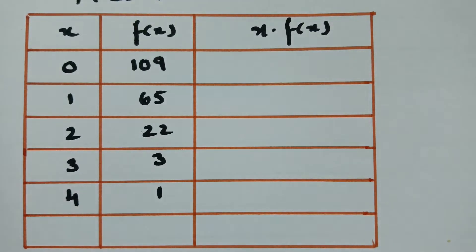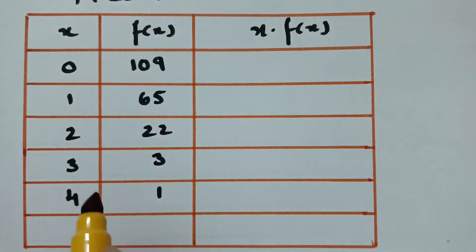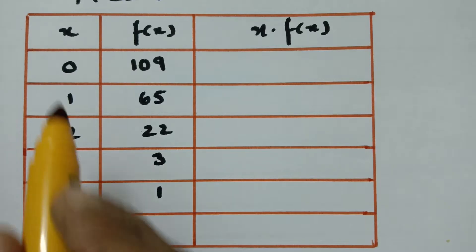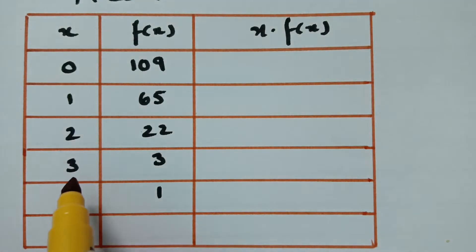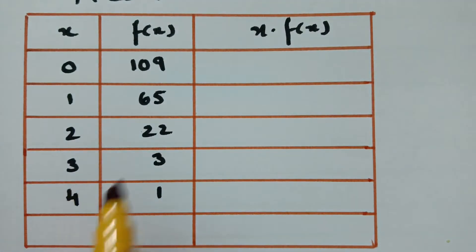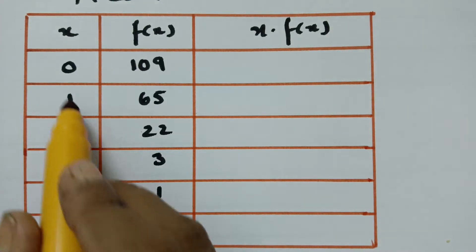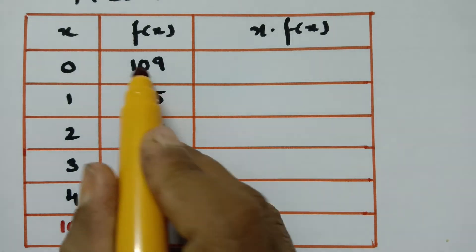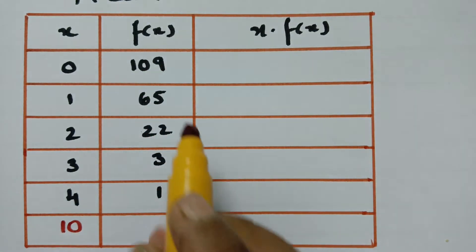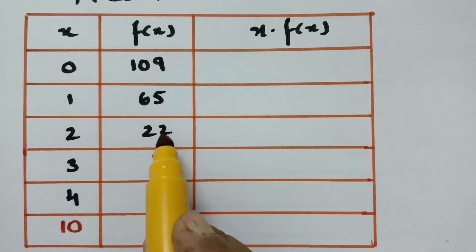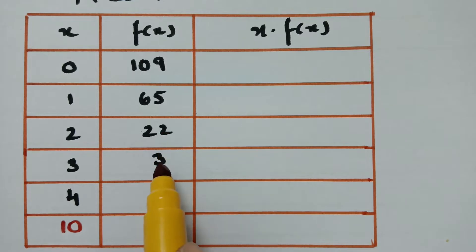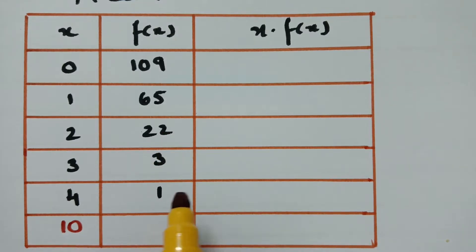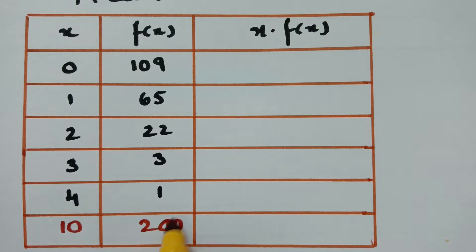If we add up all the x values, that is sigma x, we get 0 + 1 + 2 + 3 + 4. And if we add up all the frequencies — 109 + 65 + 22 + 3 + 1 — the total N is 200.